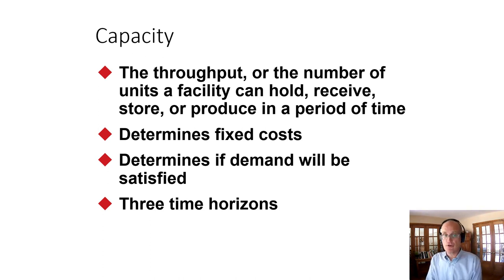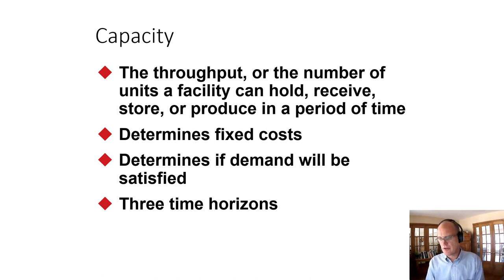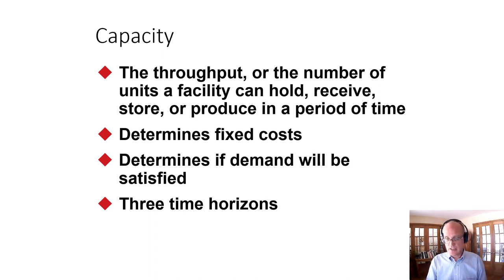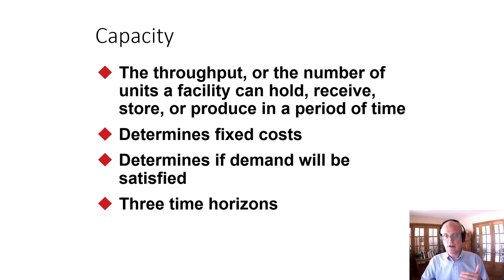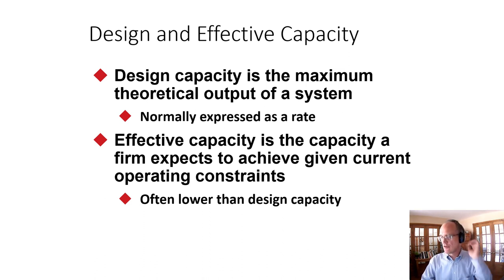It is your throughput — the number of units, people, you can hold, receive, store, produce, or serve in a period of time. So capacity is a number per period of time. It determines fixed costs to a significant degree. It determines if demand will be satisfied. And there are really three time horizons we look at for capacity: what do we do today, what do we do in the medium term, and what do we do in the long term?